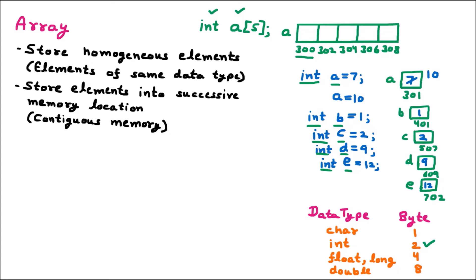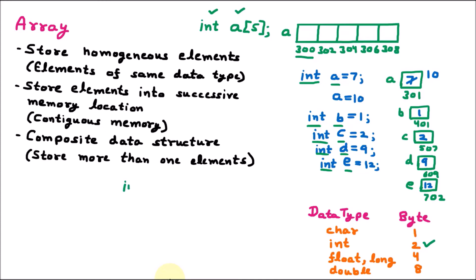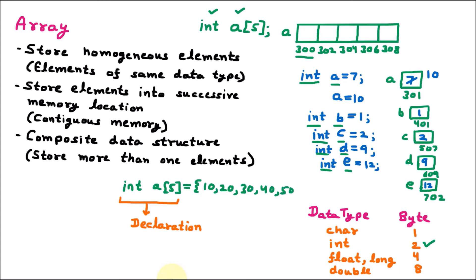An array is called a composite data structure because it can store more than one element. When we write int a[5], that is the declaration. We can then initialize it by writing: a = {10, 20, 30, 40, 50}. Providing values to the array is called initialization. At consecutive memory locations, the values 10, 20, 30, 40, and 50 will be stored.